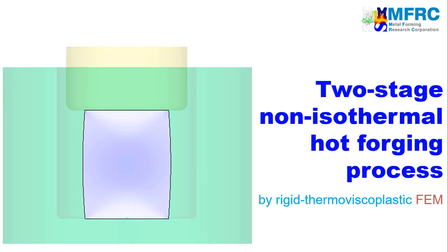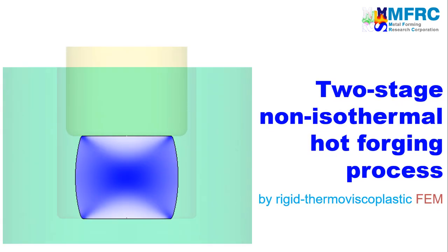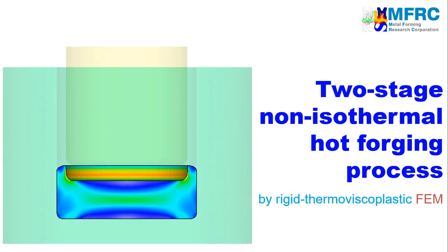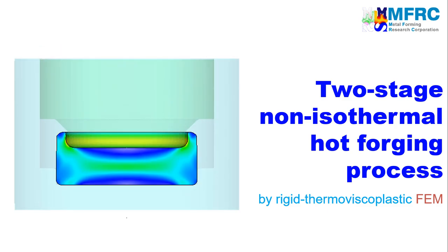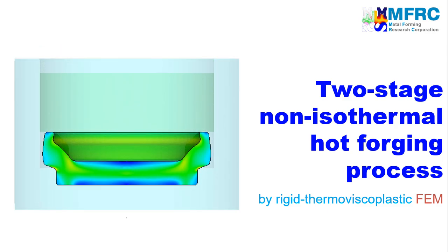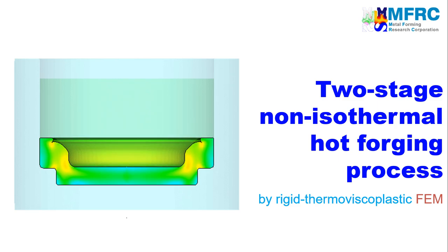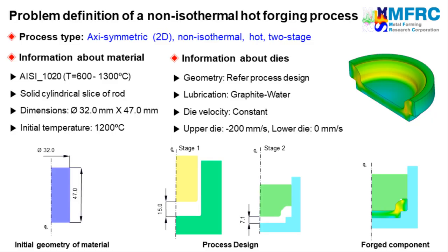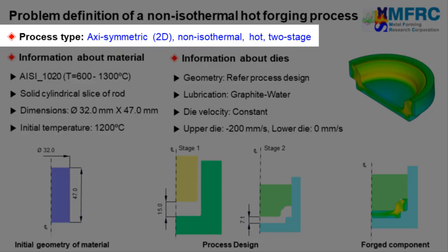In this video, you will learn how to simulate a two-stage hot forging process using the non-isothermal analysis module of AFDEX 2D, the intelligent metal forming simulator. Let's get started with the process type first. Since the geometries of the workpiece and the dies are axisymmetric, we will carry out a 2D axisymmetric simulation. The temperature change is considered in the simulation, so this will be a non-isothermal simulation.